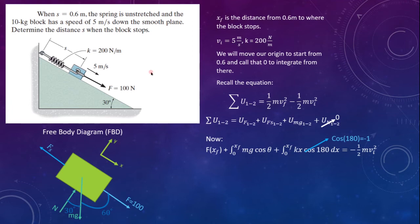So, if we continue from there, we'll have f times xf plus mg cosine of 60, or you could say sine of 30, times xf minus k over 2 x squared evaluated at xf or x final to 0 equals 1 half mv initial squared.